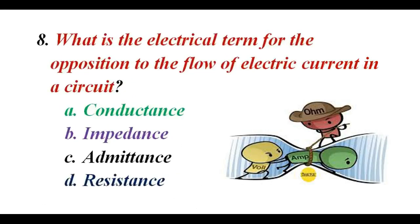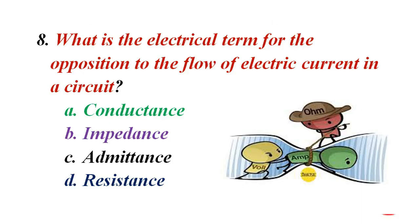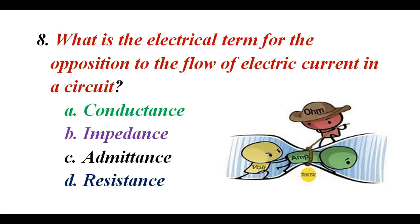What is the electrical term for opposition to the flow of electric current in a circuit? A. Conductance. B. Impedance. C. Admittance. D. Resistance. The correct answer is D. Resistance.